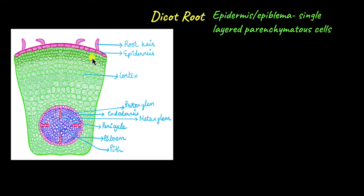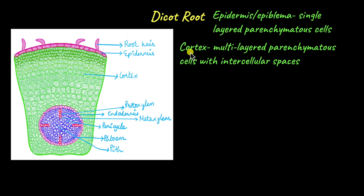Below the epidermis is the multi-layered cortex. Cortex is made up of parenchymatous cells which are circular in shape and have plenty of intercellular space between them. Cortex exists to offer structural support and transports nutrients to the root.